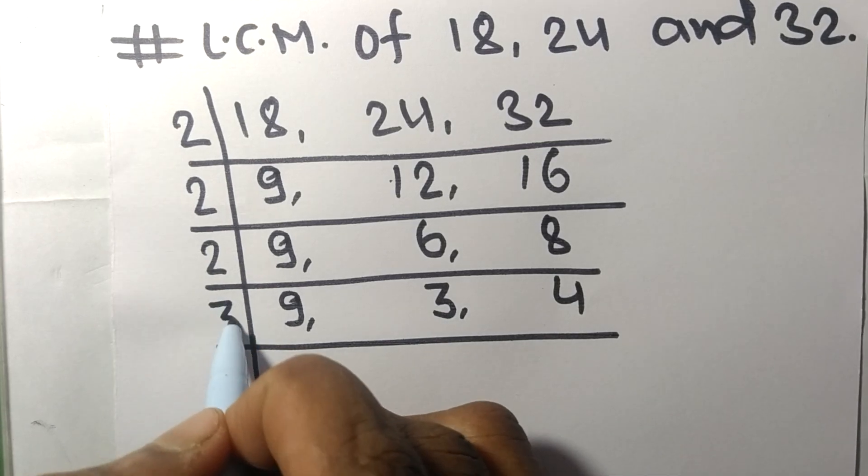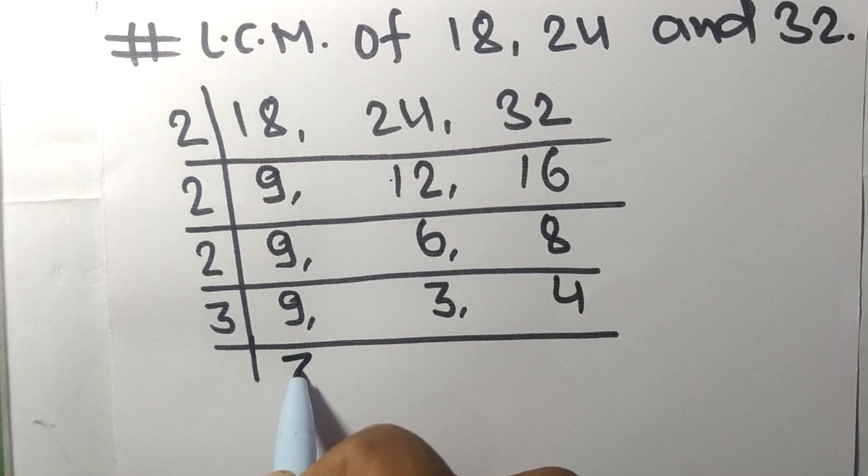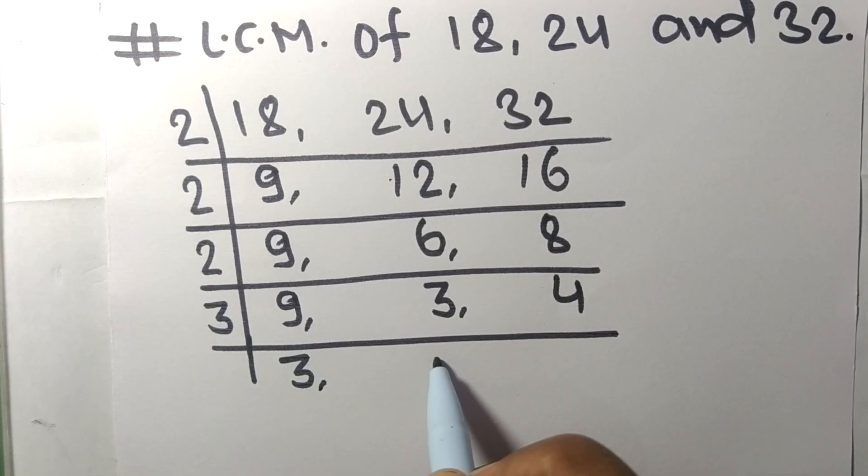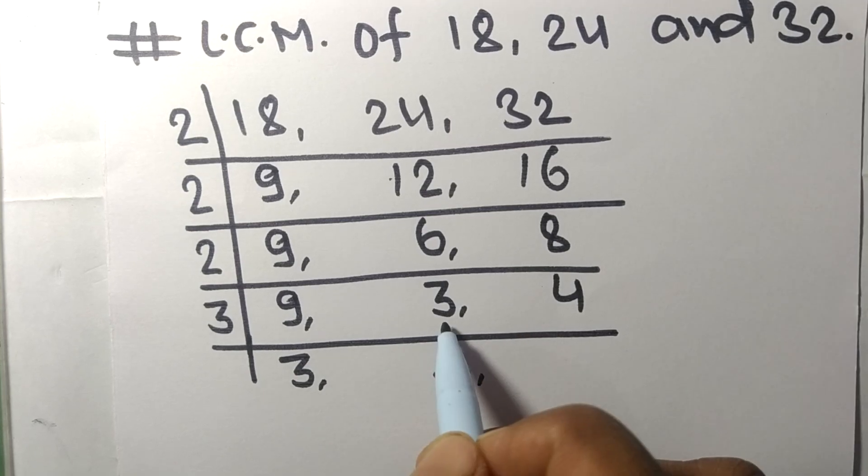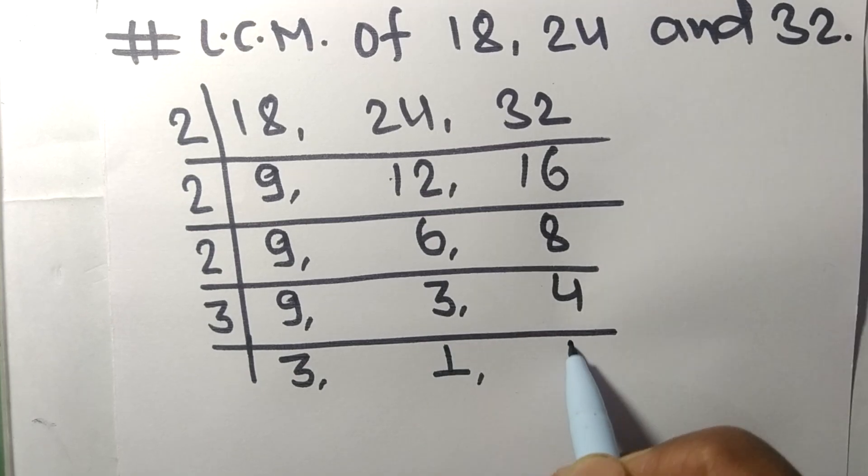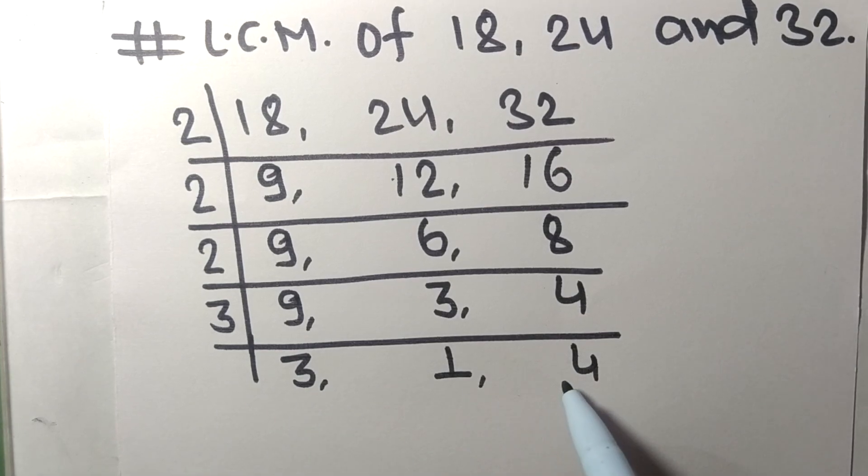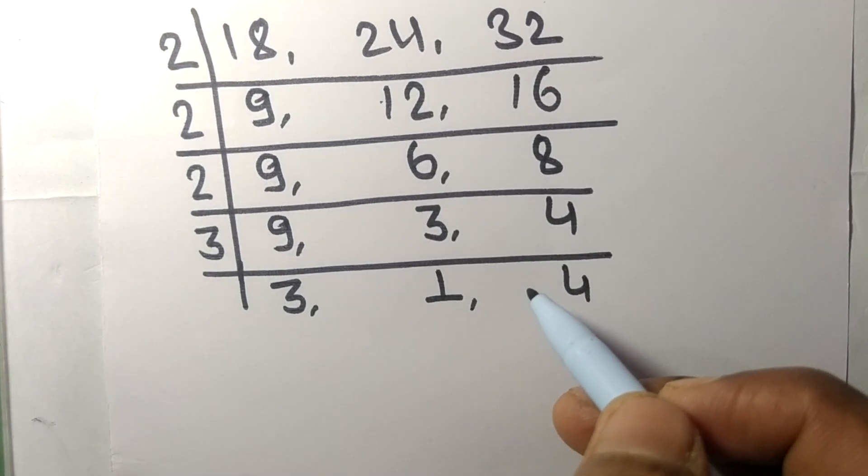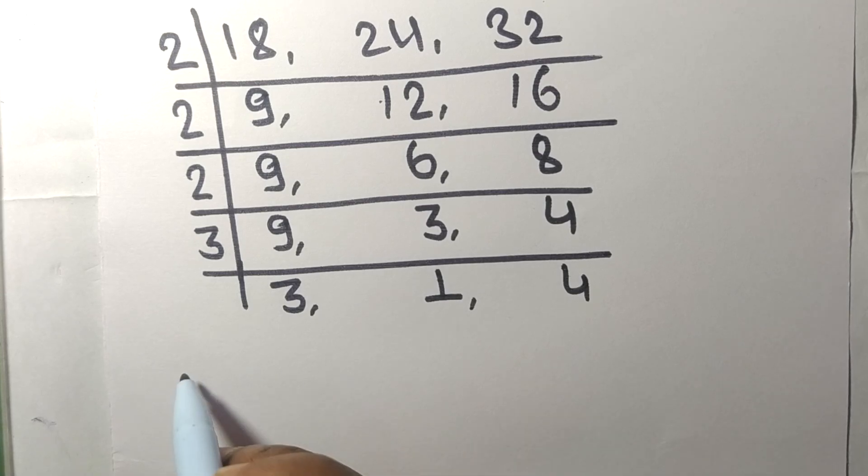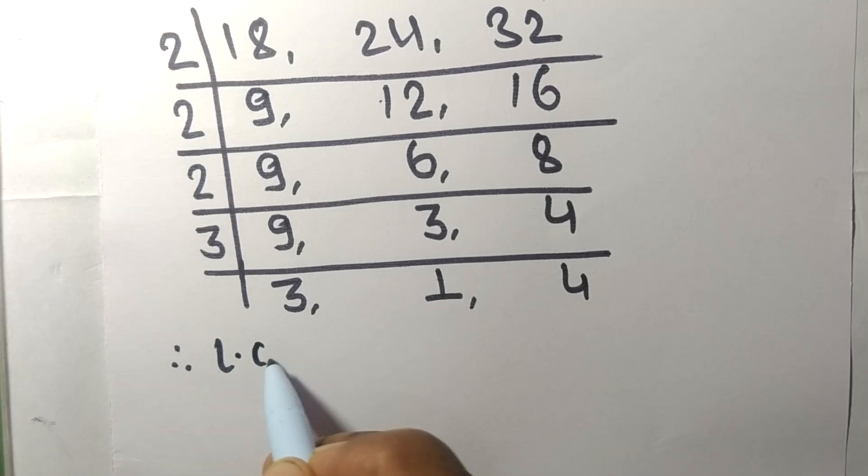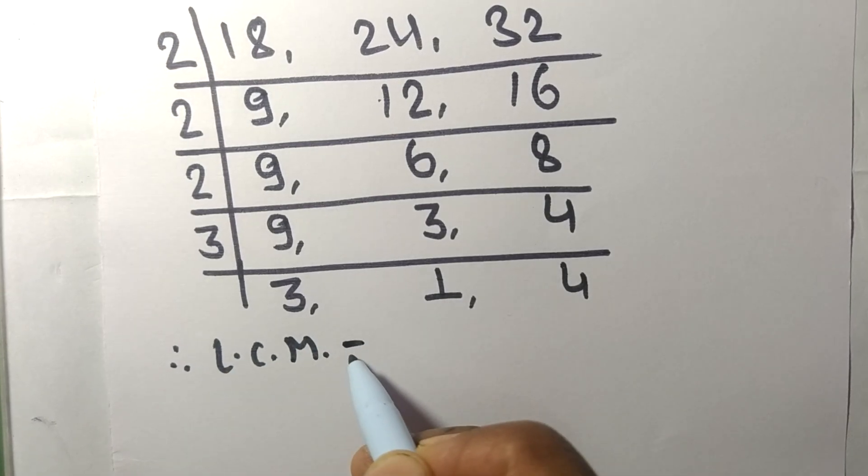3 times 3 equals 9, 3 times 1 equals 3. 4 is not divisible, so it stays the same. Now the numbers 3, 1, and 4 are not divisible by the same number. Therefore, the LCM is equal to...